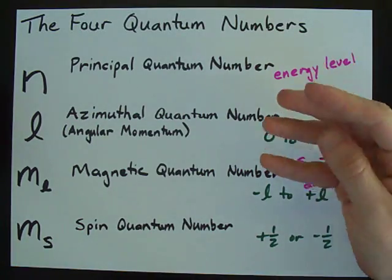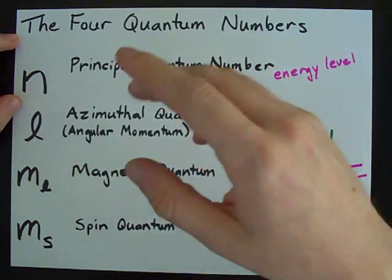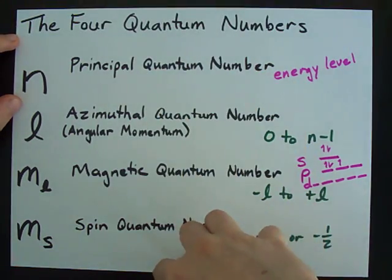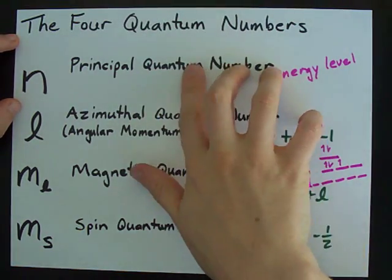For quantum numbers, you're going to have to memorize what they are, maybe what they're called, and most importantly, what the numbers can be.